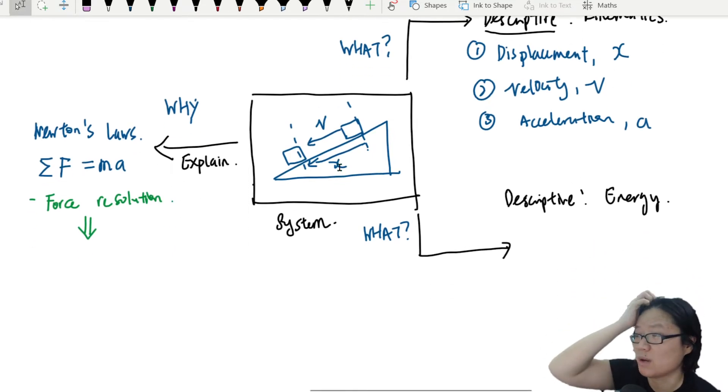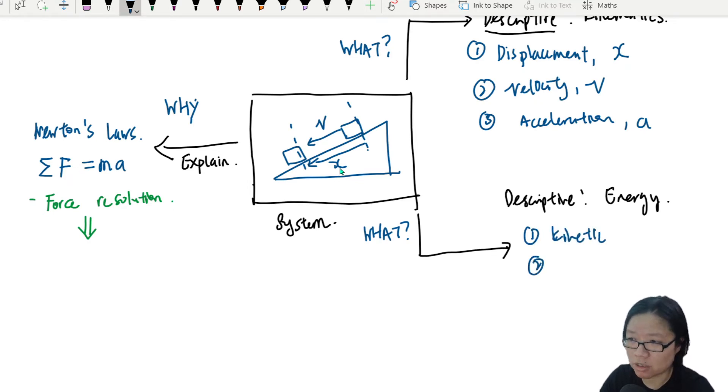Then the second one that we're going to look at when it comes to descriptive is in terms of conservation of energy, or basically what are the energy changes. Because whenever you want to describe something, the motion of an object, you can go down the kinematics route where you say it has traveled this far and it has gained that much velocity or lost that much velocity. That's possible.